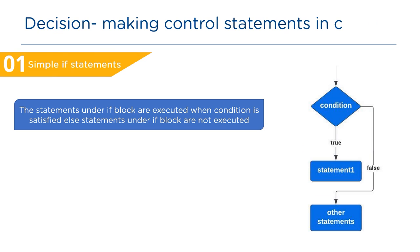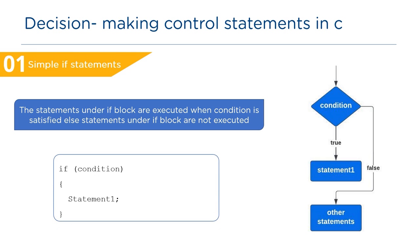Looking at the flowchart, it is clear that it first evaluates the if condition. If the condition is true, the statements under if will be executed; otherwise, other statements outside the if will be executed. The syntax of simple if is: if (condition) followed by the statement inside curly brackets.